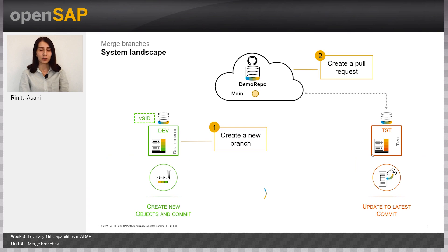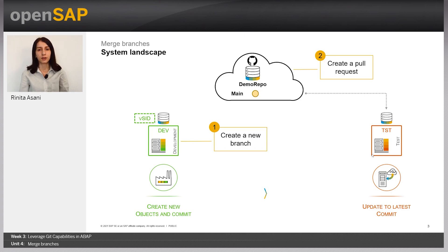You are already familiar with our system landscape which consists of a development system and a test system. In the previous units you already created a repository with its default main branch, and now in this unit you will create another branch — for example, a feature branch — make some changes there, merge it on the local repository using the GCTS app, and merge it on the remote repository by creating a pull request.